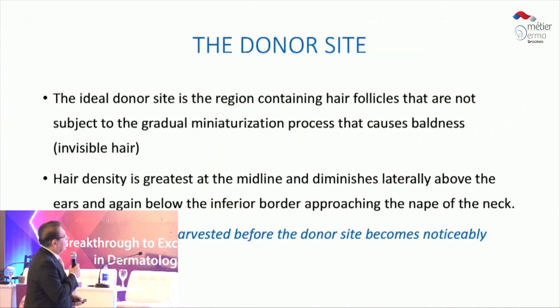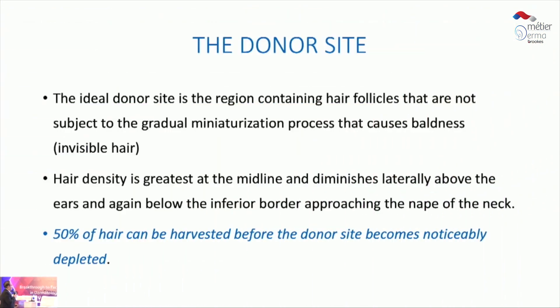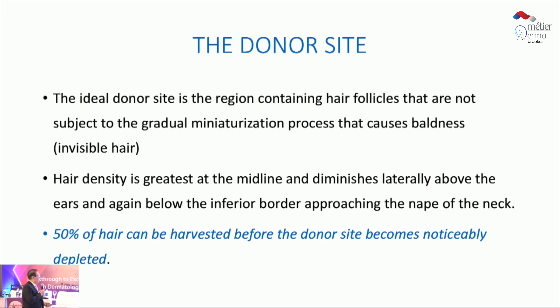When we talk about the safe donor area, we talk about the relative safe donor area — the area right in the middle, just above the occipital protuberance. Up to 50% of the hair can be harvested before the donor area becomes noticeably depleted. That is one important benchmark.